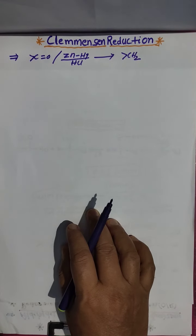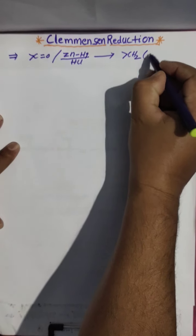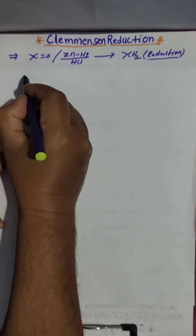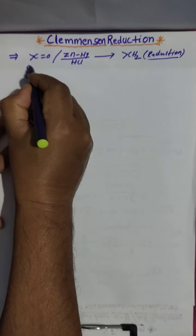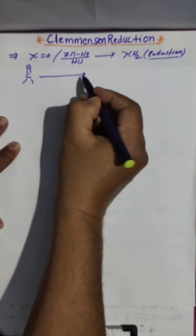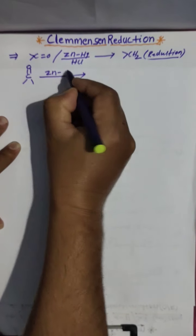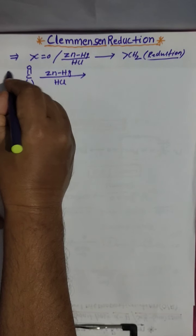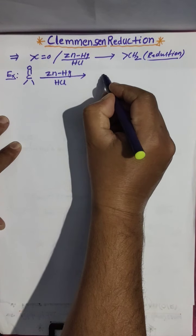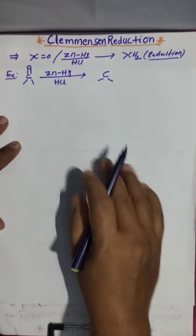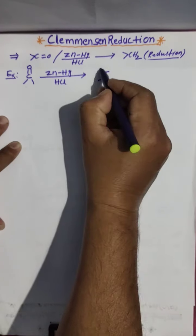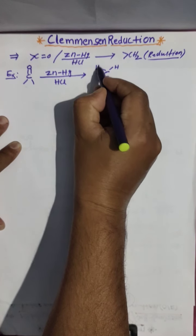This is the Clemmensen reduction. We will write the reaction: it is a reduction reaction. The C=O group, when subjected to reduction in the presence of zinc amalgam and HCl, gives alkanes.